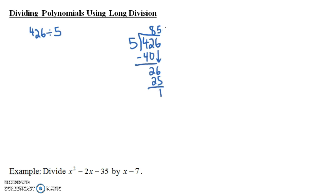Sometimes people put R1, but really what this means is we have 85 plus 1 fifth, or sometimes you could just write it as a mixed fraction, 85 and 1 fifth, or 85.2. Now, what does it mean to say that 85.2 is the answer? Well, it means that if you do 85.2 times 5, you'll end up getting 426. That's just long division of numbers.